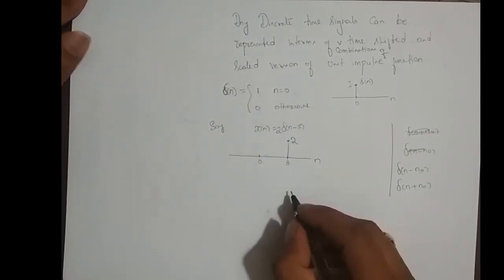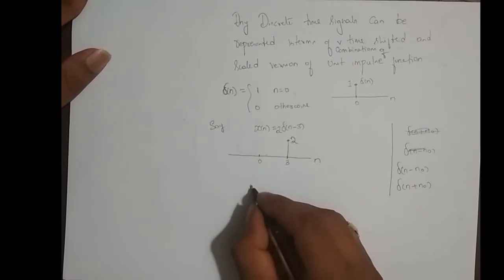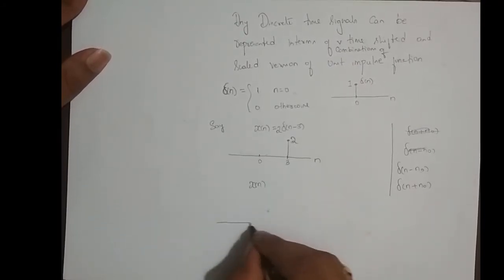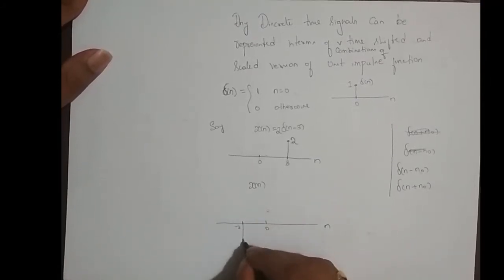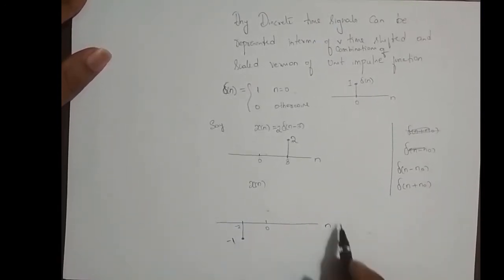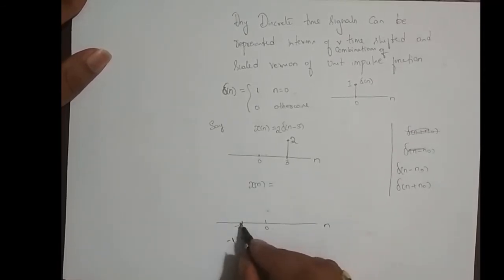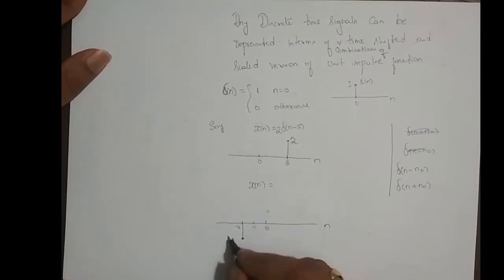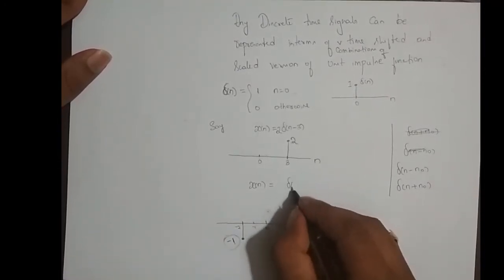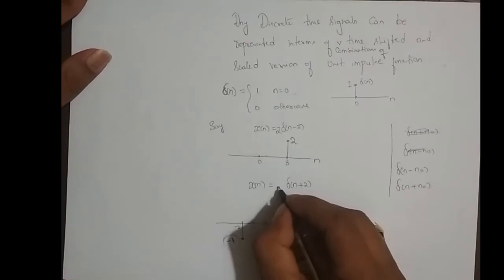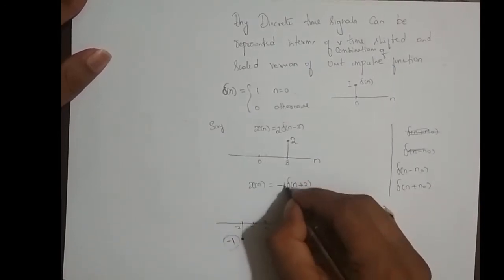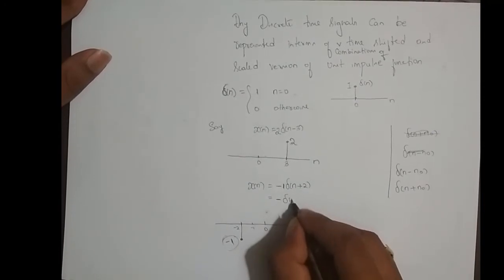Let me give one more example. Say x of n is a discrete time signal at n equal to minus 2 and its amplitude is minus 1. How do we represent this in terms of the delta function? This is nothing but delta of n shifted left 2 times, and its amplitude scaled by minus 1. So I shifted this delta function two times left and scaled it by minus 1, which I can write as minus delta of n plus 2.